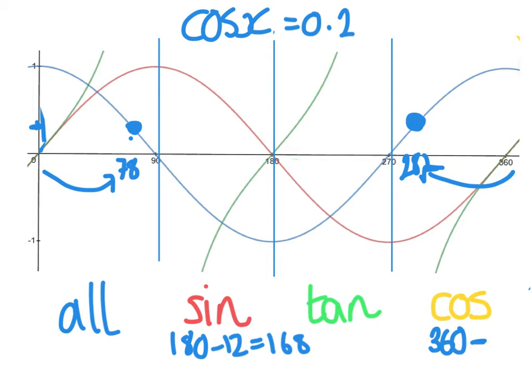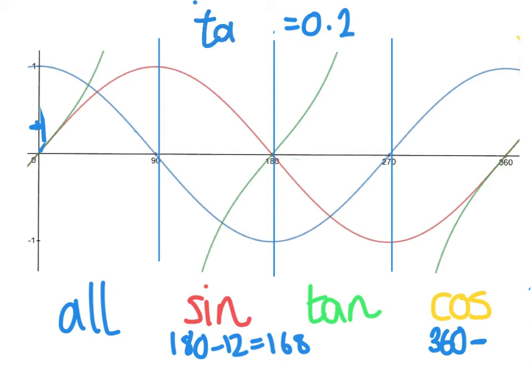So the last one to show you is the tan. So if I change the equation, I'll do it with 0.2. So if I do tan x is 0.2 now, looking at the tan graph, the one in green, there's an answer here and there's an answer further over here. So if you do shift tan of 0.2, it gives you 11.